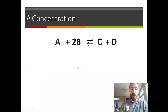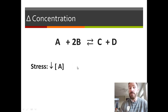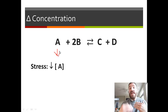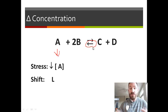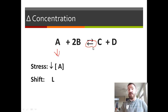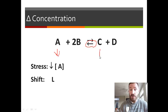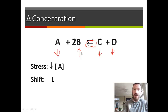Let's go back to the reaction A + B → C + D, but this time the stress is removing A. Since we have too little A, we need to make more A. The only way to make more A is to increase the rate of the reverse reaction, which goes to the left, so the shift is left. When it shifts left, C and D are used up at a greater rate, so those amounts decrease. More B is created, so the amount of B increases.